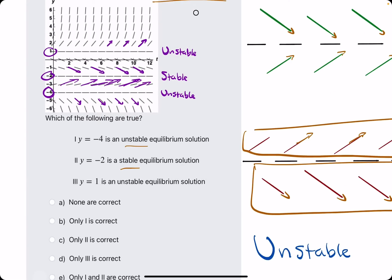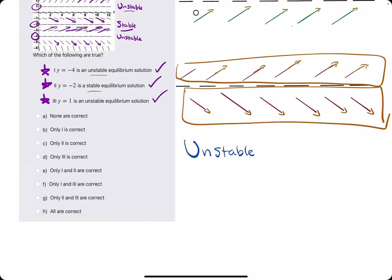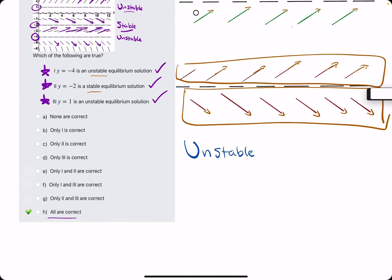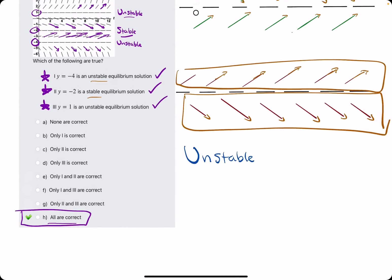Alright. Which of the following are true? Number 1, y equals negative 4 is an unstable. Yep, we just said that. Good. Alright, number 2, y equals negative 2 is a stable equilibrium solution. We said stable, so that is true. Number 3, y equals 1 is unstable. That is also true. That's also what we labeled. So, it looks like all of them are correct in this case.